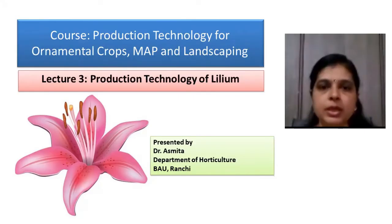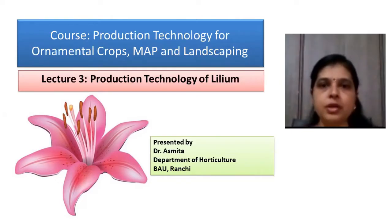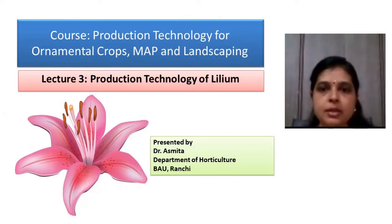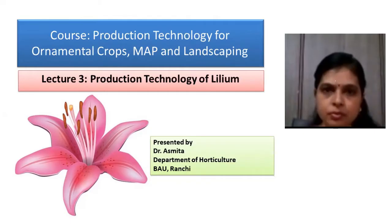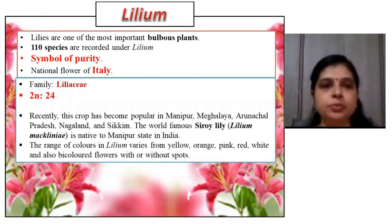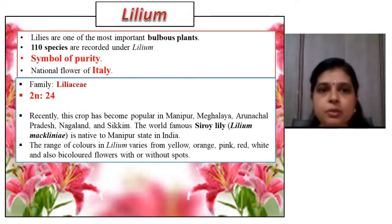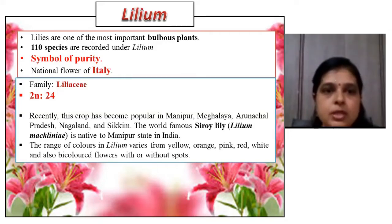This is the third lecture for fourth semester BSc Agriculture students. Today, Dr. Asmita will cover the production technology of lilium. Lilium is one of the important bulbous plants, recognized as a symbol of purity and the national flower of Italy. It belongs to the family Liliaceae, with a basic chromosome number of 12, giving a diploid chromosome number of 24.